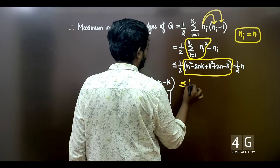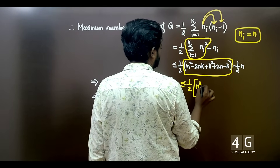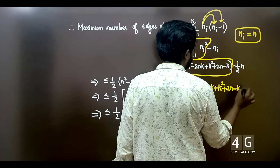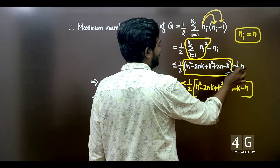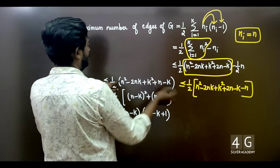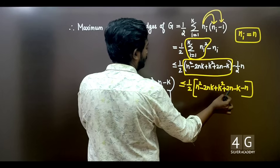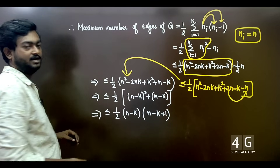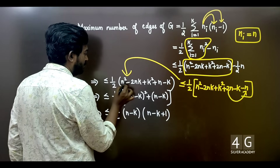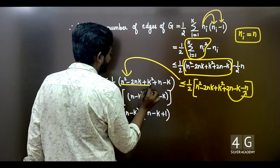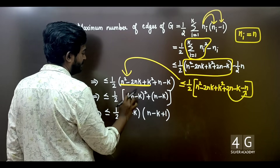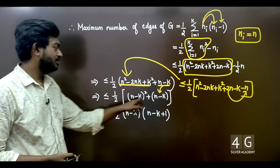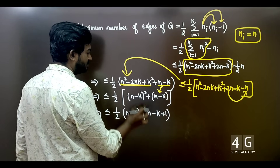The next step is 1/2 times (n² minus 2nk plus k² plus 2n minus k), simplified to 1/2 times (n² minus 2nk plus k²), which is 1/2 times (n minus k)² plus (n minus k). Using the formula a² minus 2ab plus b² equals (a minus b)², we get the result as (n-k)(n-k+1)/2.